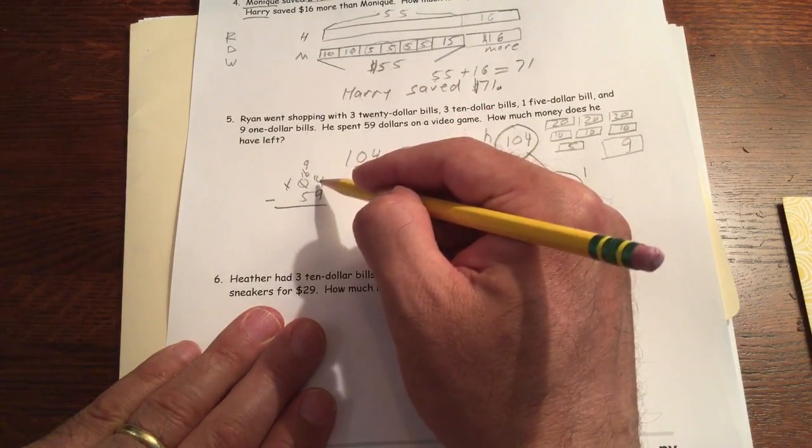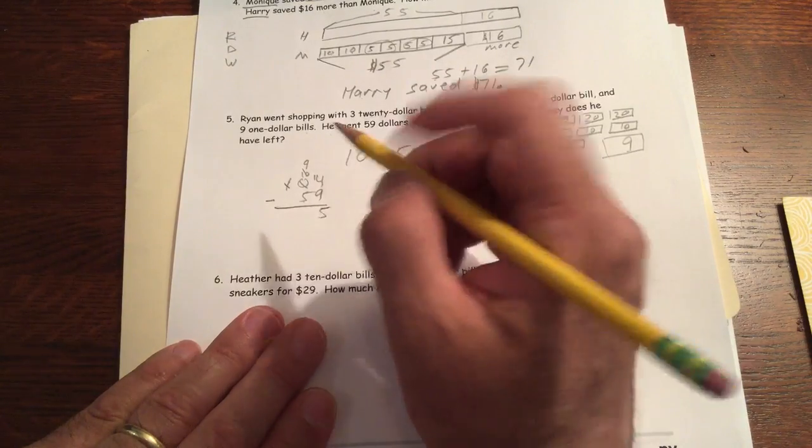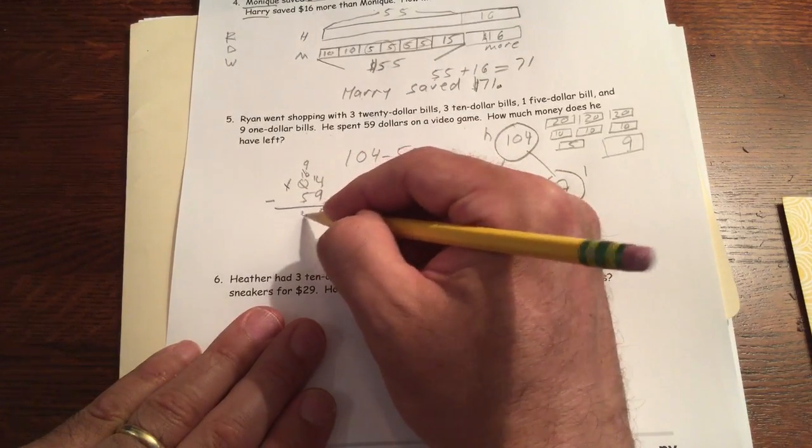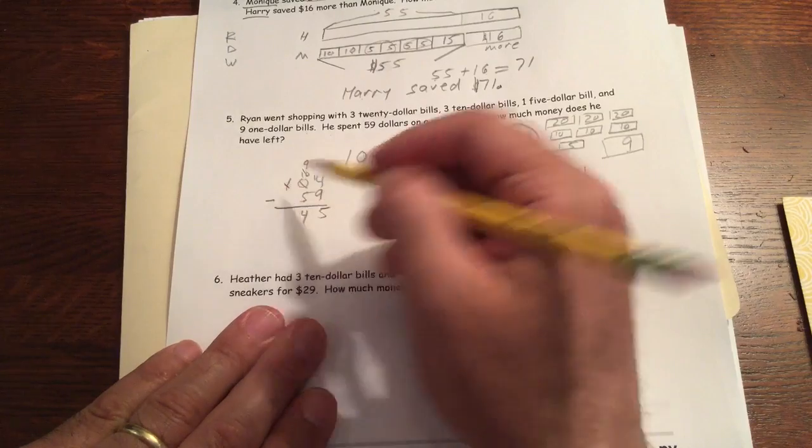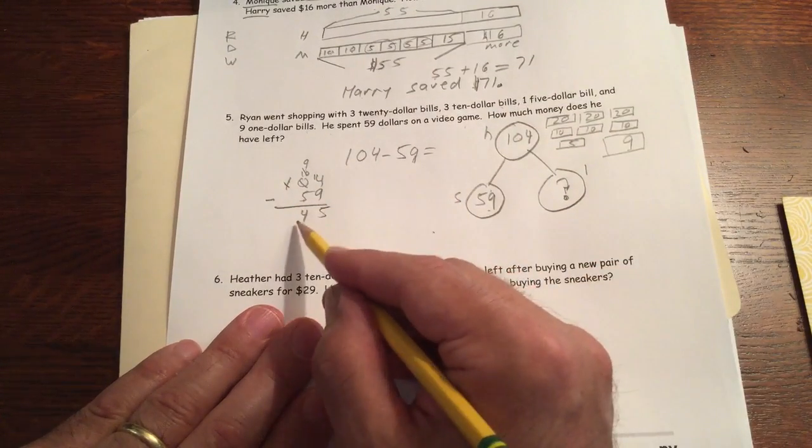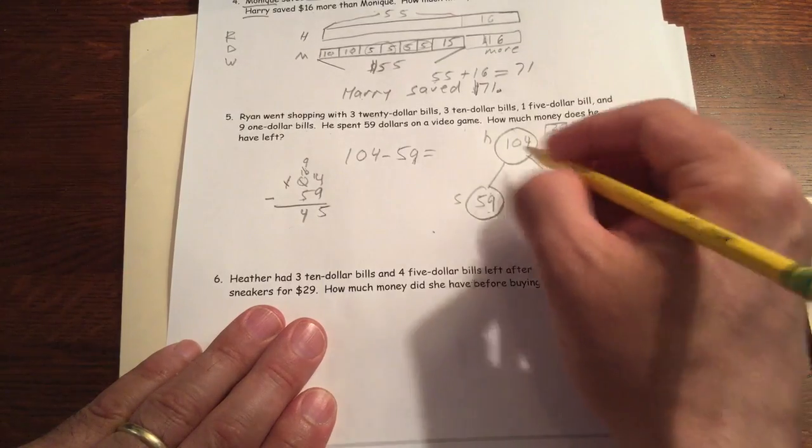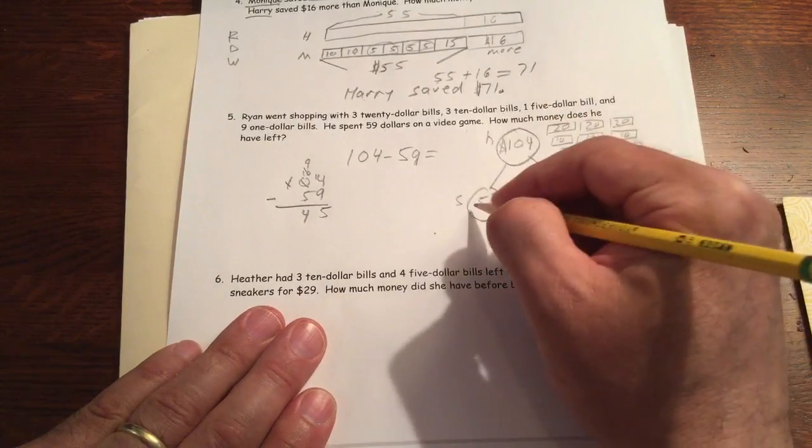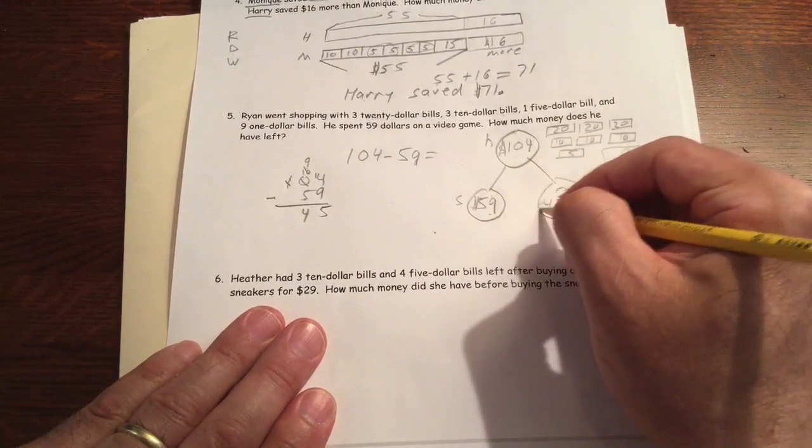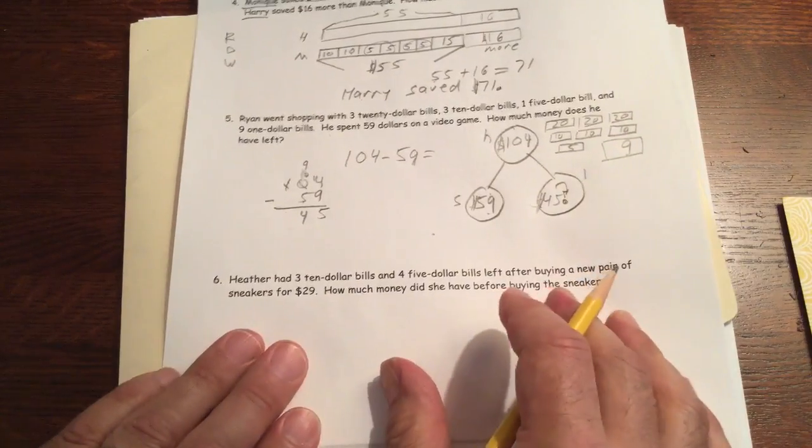So 14 minus 9 is 5. 9 minus 5 is 4. And the 100 we don't have any more. So $45 here. These are all dollars. Don't forget that we're not dealing in cents anymore. Like the first page, these are dollars.